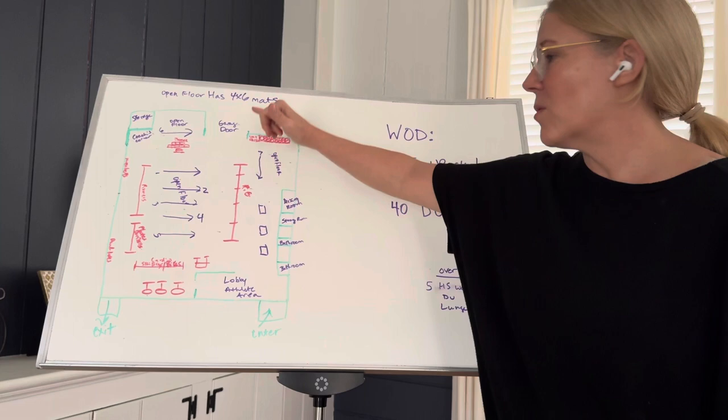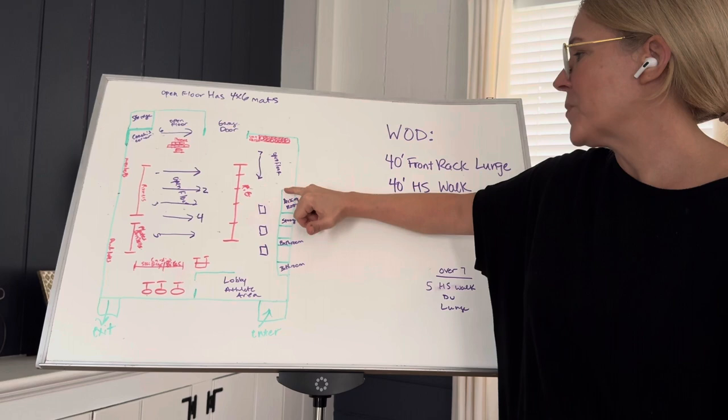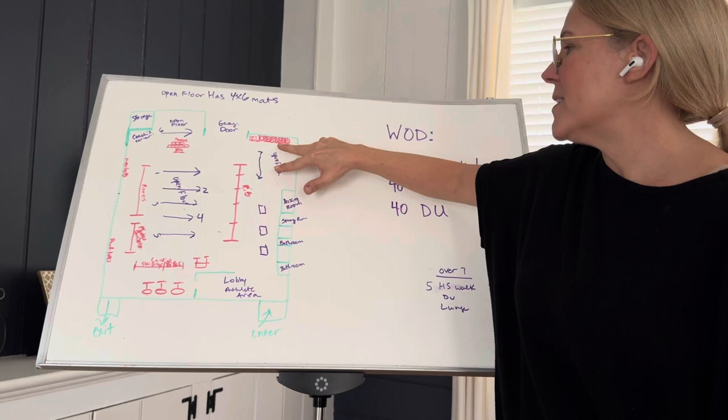So here is the floor plan for our gym. It's kind of a long rectangle. You enter through this door, you can walk into the lobby athlete area. To your right is a long wall with two bathrooms, a storage room, a dressing room. The wall stops. There's kind of a little indentation here.